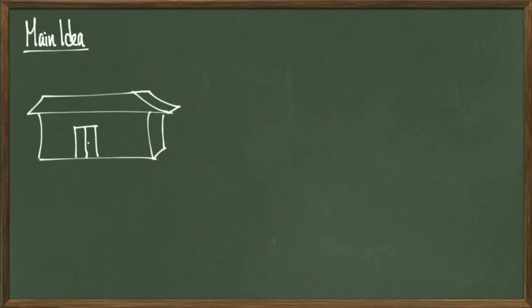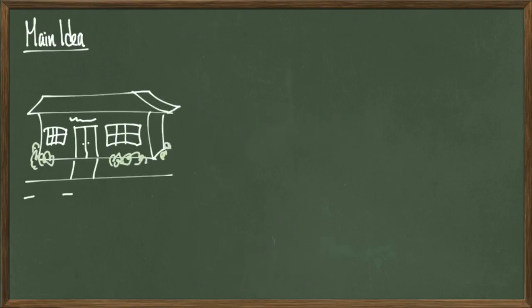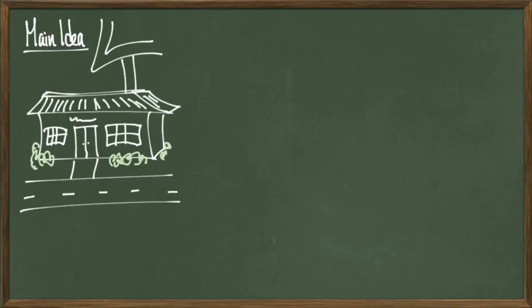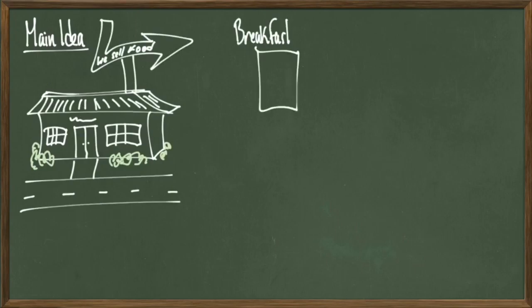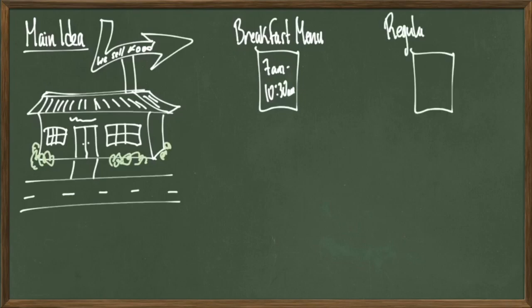Let's go over the main concept here. Suppose that I'm going to a restaurant that has two separate menus based on what time I'm actually trying to eat there. I'm going to have a breakfast menu and a regular menu. The breakfast menu is only offered between 7am and 10:30am, and then the regular menu is offered for the rest of the day, starting at 10:30am and ending at 11pm.